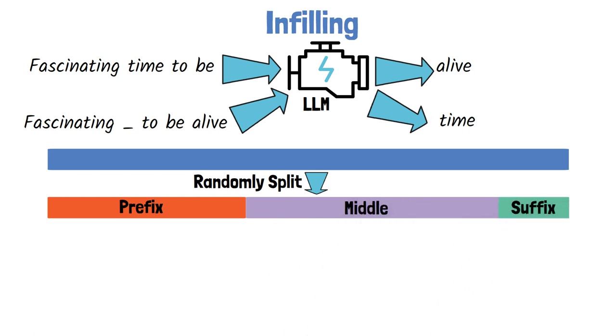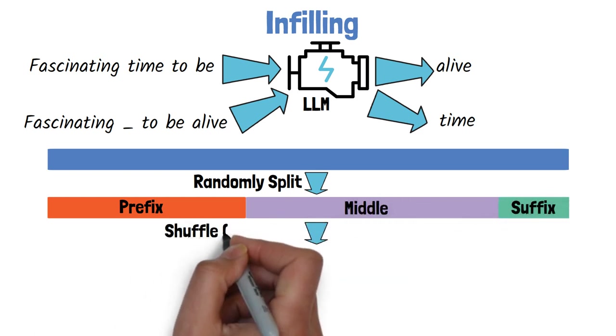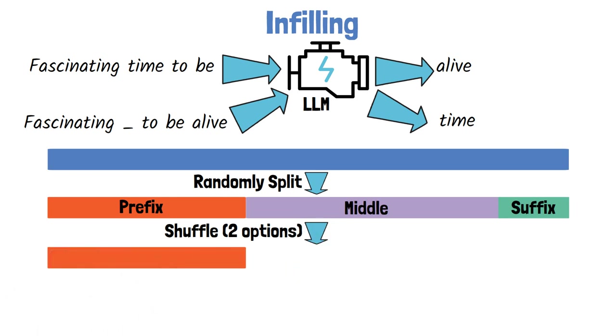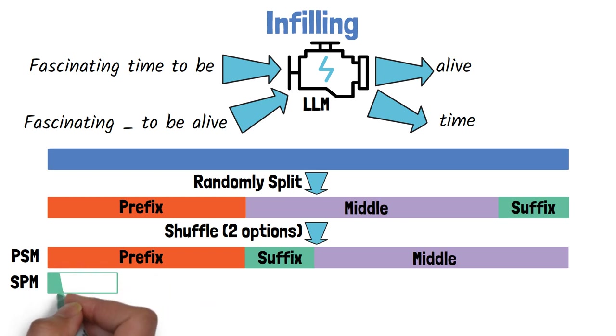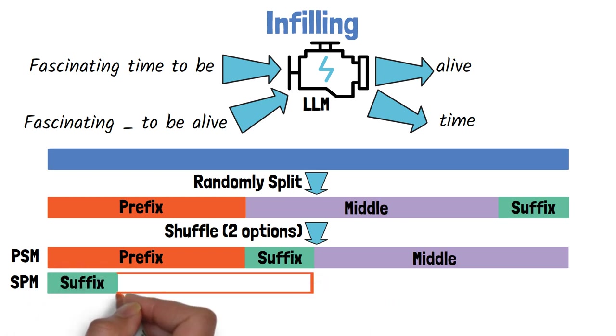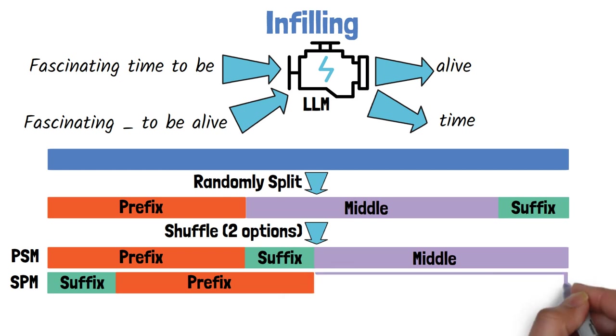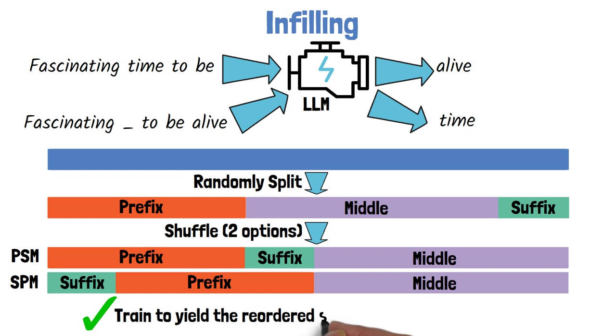Then we shuffle the three parts into two options. One is prefix-suffix-middle, where the sequence starts with a prefix, followed by the suffix and the middle part at the end. This format is called PSM, shortcut for prefix-suffix-middle. The second format is SPM, which stands for suffix-prefix-middle, where we start with a suffix, followed by the prefix and the middle at the end. We then train the model to yield the reordered sequence.